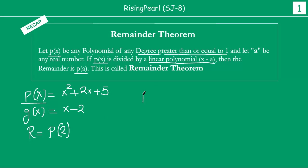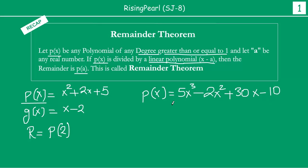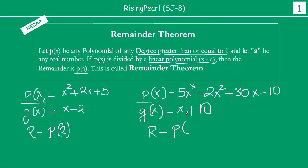Similarly, agar p(x) is something like 2x squared plus 30x minus 10, and g(x) is x plus 10, then to find the remainder when p(x) is divided by g(x), we have to find out the value of the polynomial p(x) at x equal to minus 10. We covered various different kinds of divisors in our Sawaal Jawa presentation number 7.